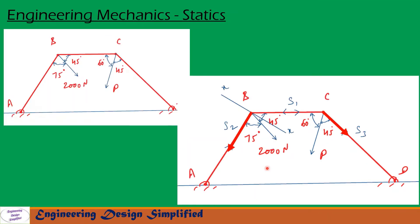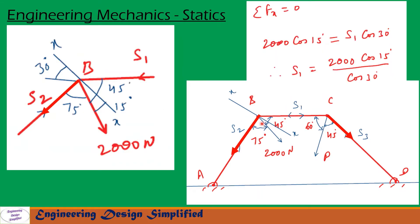First, let us look at forces and reactions. A force of 2000 newton is applied, causing link AB to undergo tension and link BC to undergo compression. Since P is applied here, this link will undergo tension. Now let us draw the free body diagram at point B. At point B, 2000 newton acts in one direction, S2 tension in link AB acts in another direction, and the angle between 2000 N and S2 is 75 degrees. In link BC there is compression, with the reaction force acting accordingly, and the angle between S1 and 2000 N is 45 degrees.